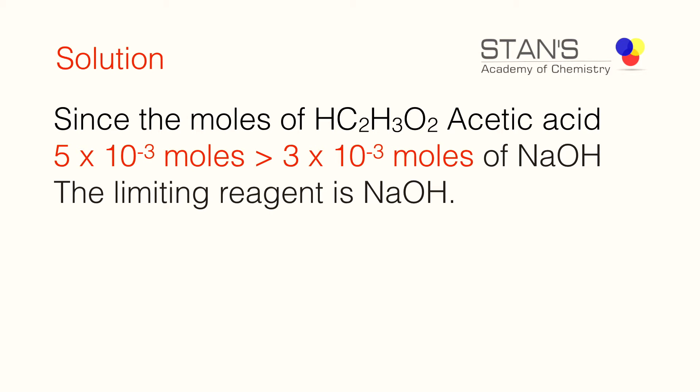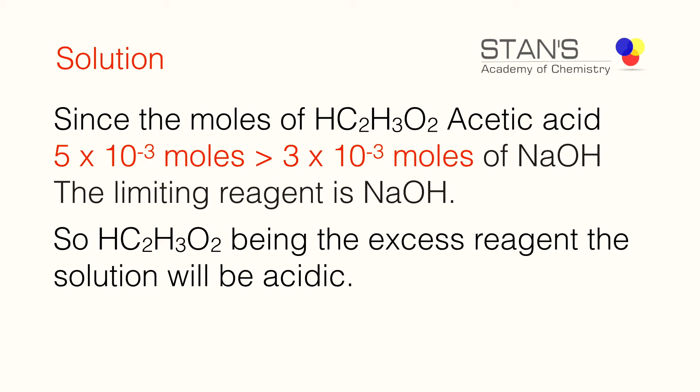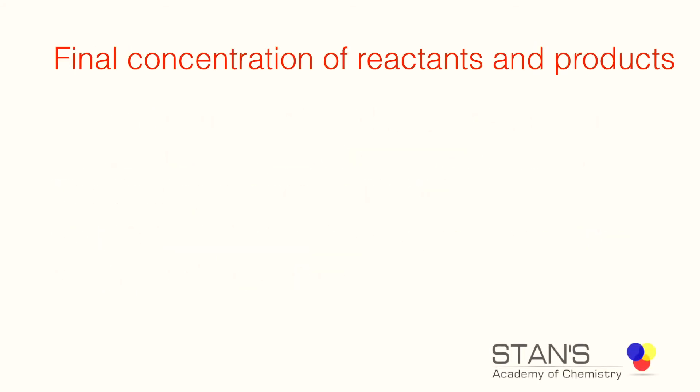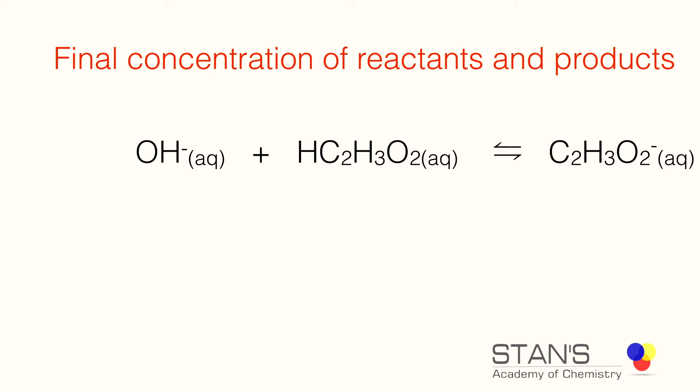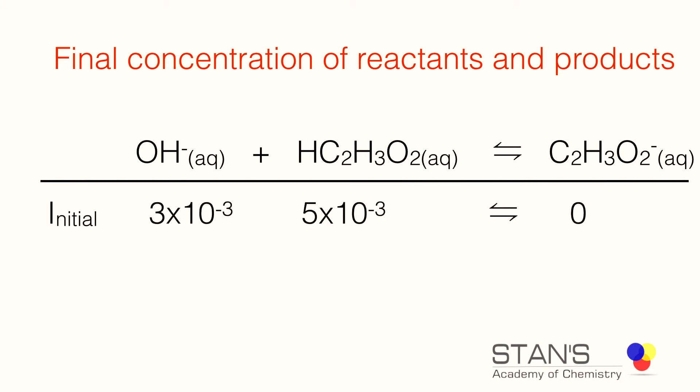Since the number of moles of acetic acid (5 × 10⁻³) is larger than that of sodium hydroxide (3 × 10⁻³), the limiting reagent is sodium hydroxide, which is completely used up. This means the resulting mixture will have unreacted acetic acid remaining, making the solution acidic. We can then determine the pH by finding the number of moles of unreacted acid and conjugate base formed.